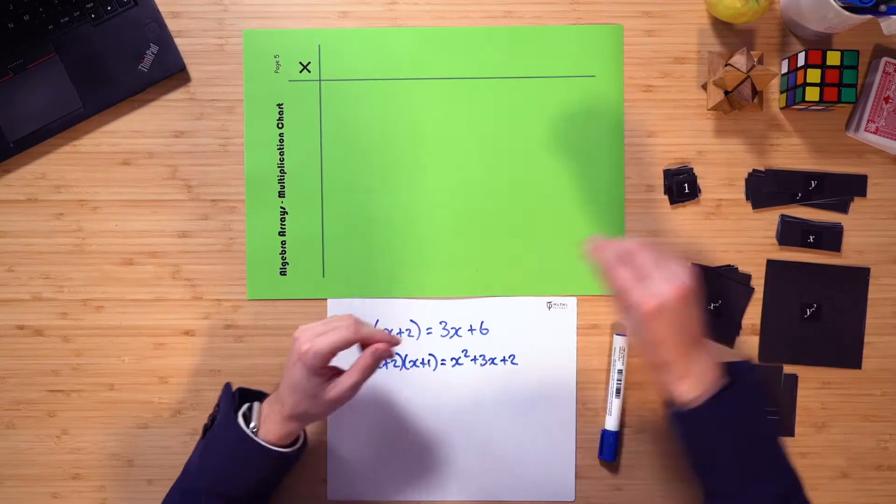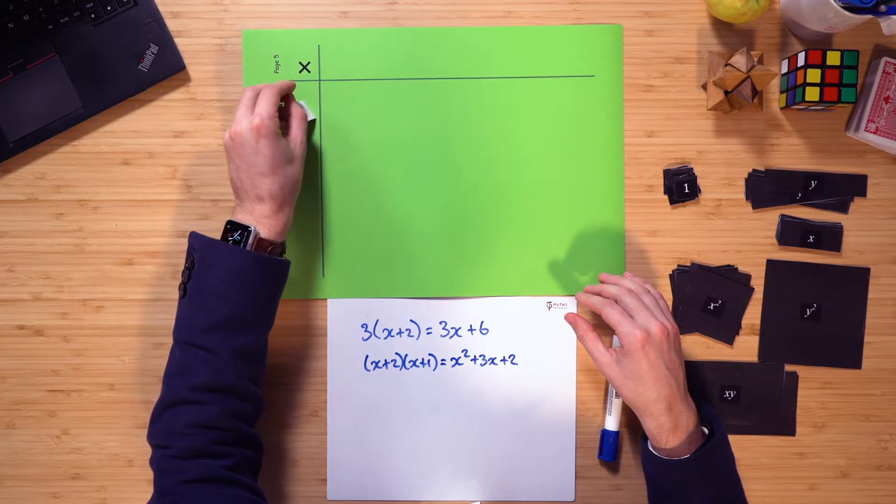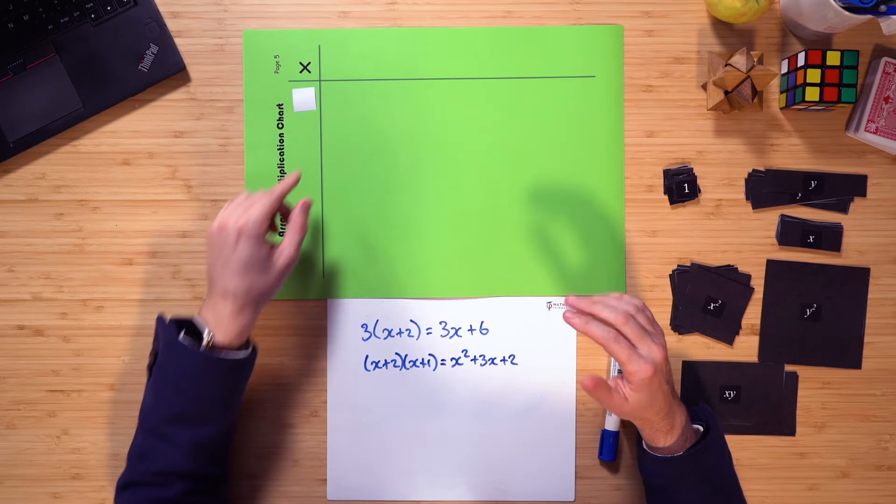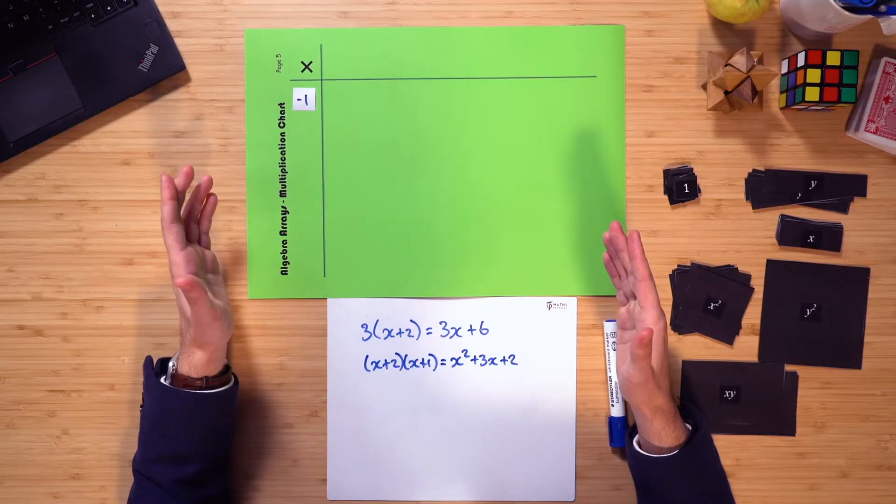Now, some of you out there may be wondering, well, that's all well and good, but how do we then deal with negatives? Well, let me show you. If we had positive 1 here before, to use a negative, all we need to do is simply flip it over. And as you can see, the white now represents a negative. If you want, you could actually write negative 1 on it too. But quite often, the students just know, and they don't need to do that.